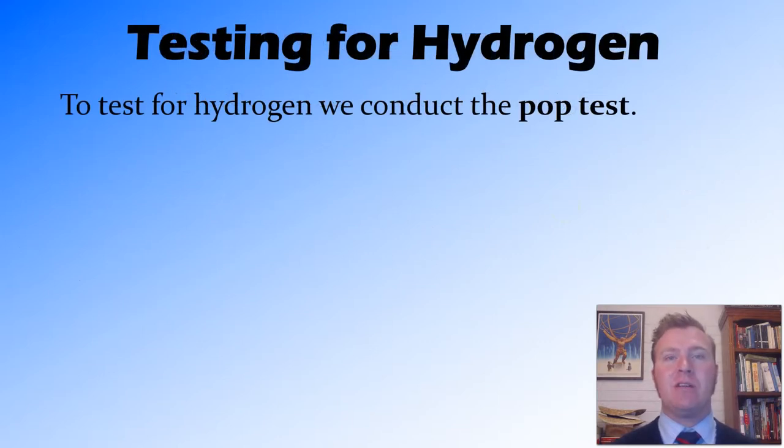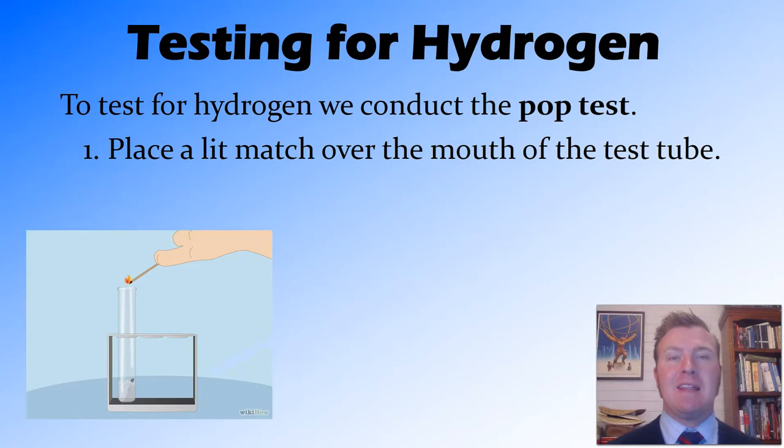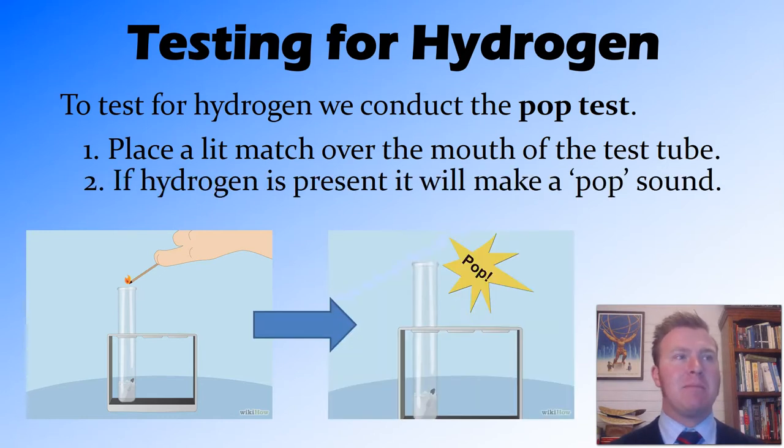Okay, so that hydrogen that's produced during this reaction can be tested for using what's called the pop test. To do the pop test, we take a lit match and place it over the mouth of the test tube or whatever container you have it in. Depending on how much hydrogen is being produced, you may want to put a stopper or your finger, providing you're wearing a glove, over top of the test tube to trap a bit more of that hydrogen, so you get a better concentration of hydrogen in the air. And then once you place that lit match, it will make a very distinctive popping sound. And if it pops, that tells you that there is hydrogen.